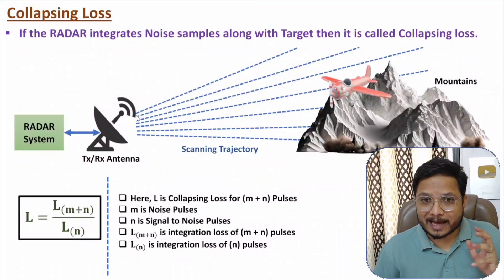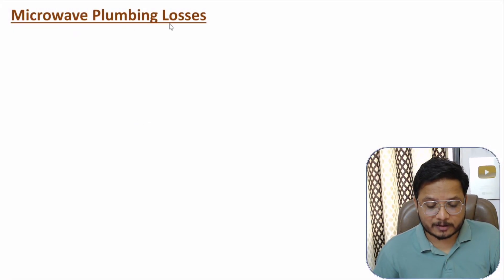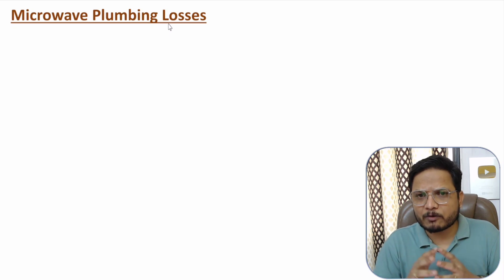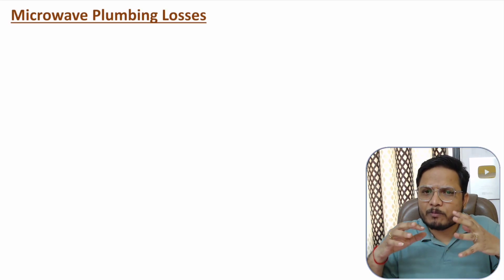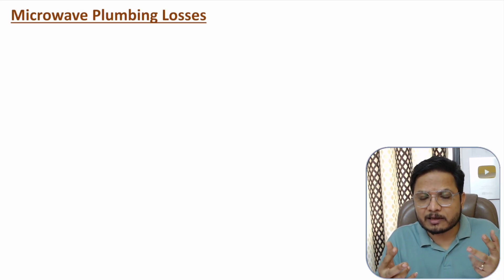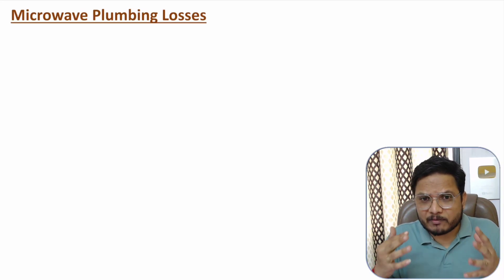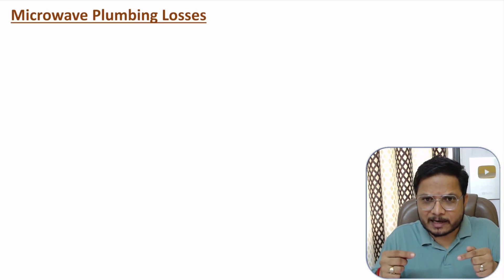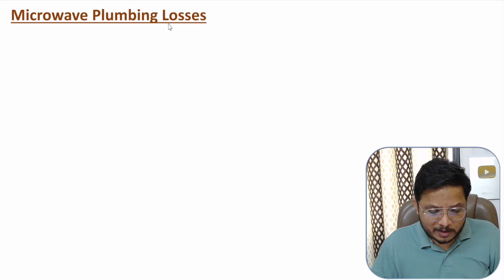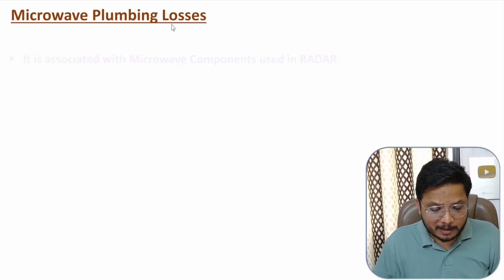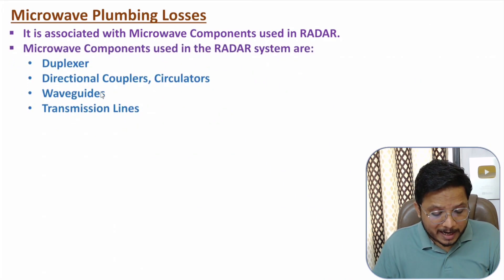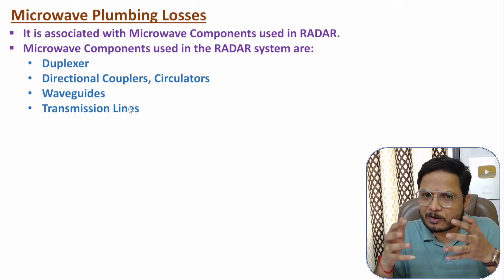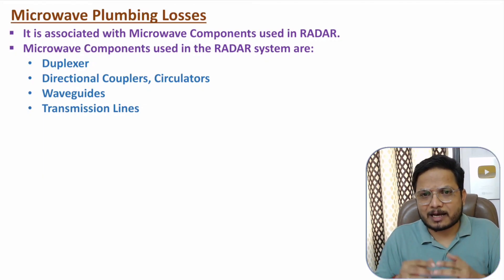Next are microwave plumbing losses. Radar systems use many microwave devices for signal processing, transmission, and propagation. As many microwave components are interconnected — such as duplexers, directional couplers, circulators, waveguides, and transmission lines — losses arise from this plumbing of components inside the radar system.